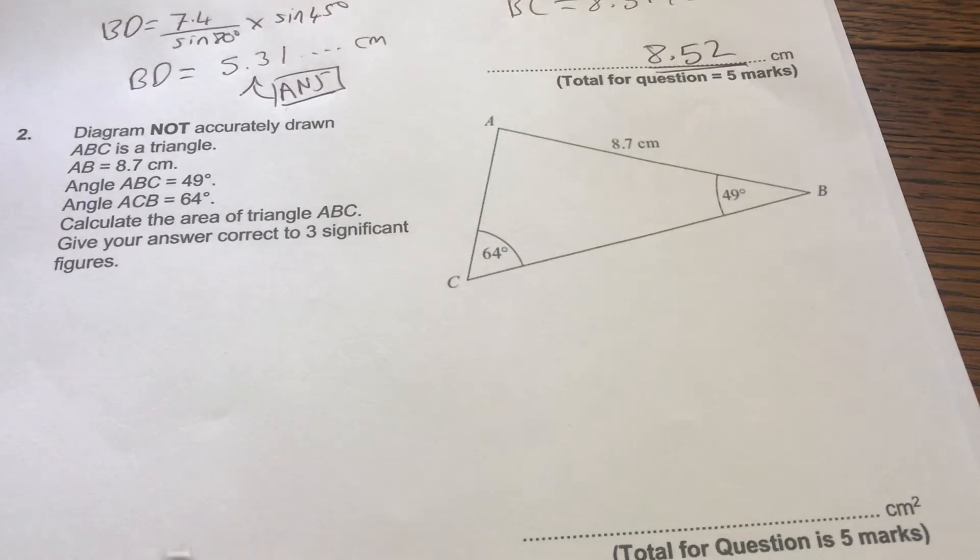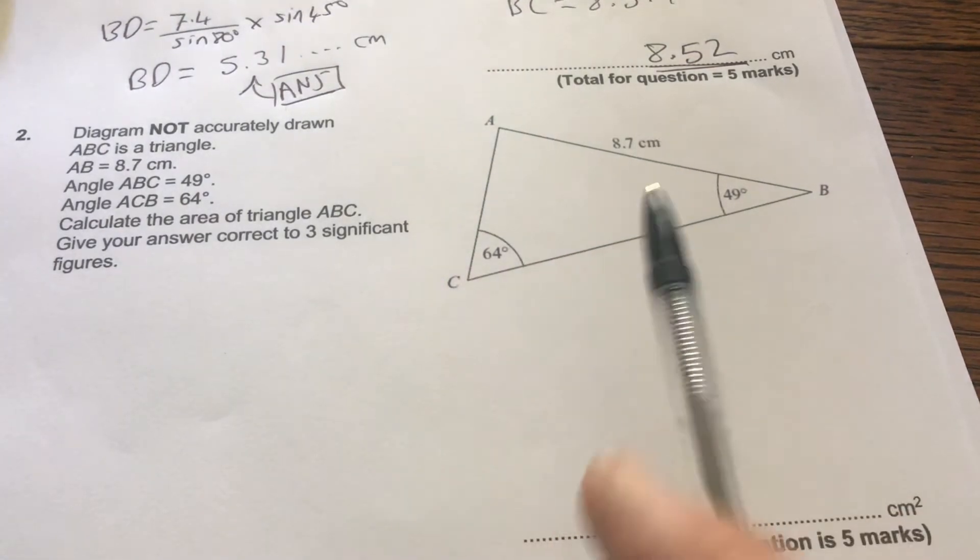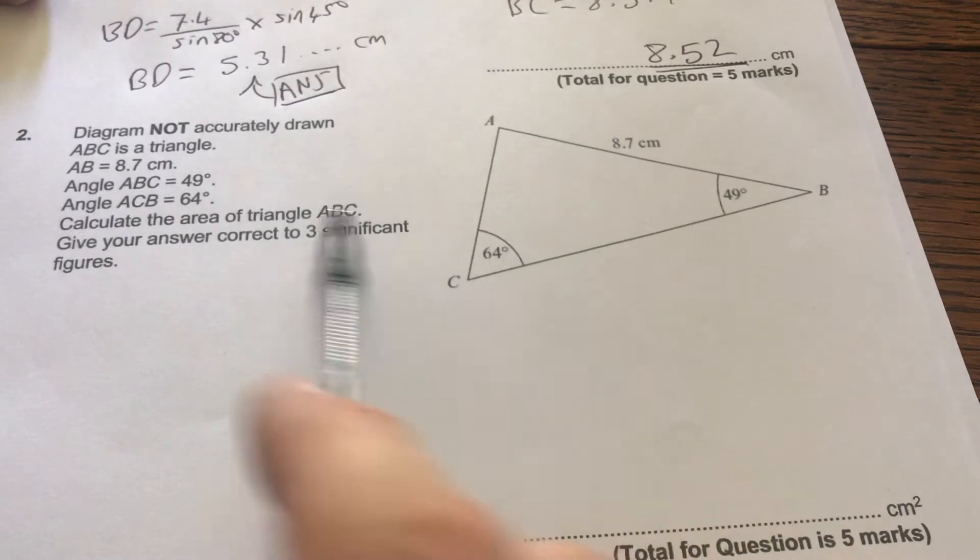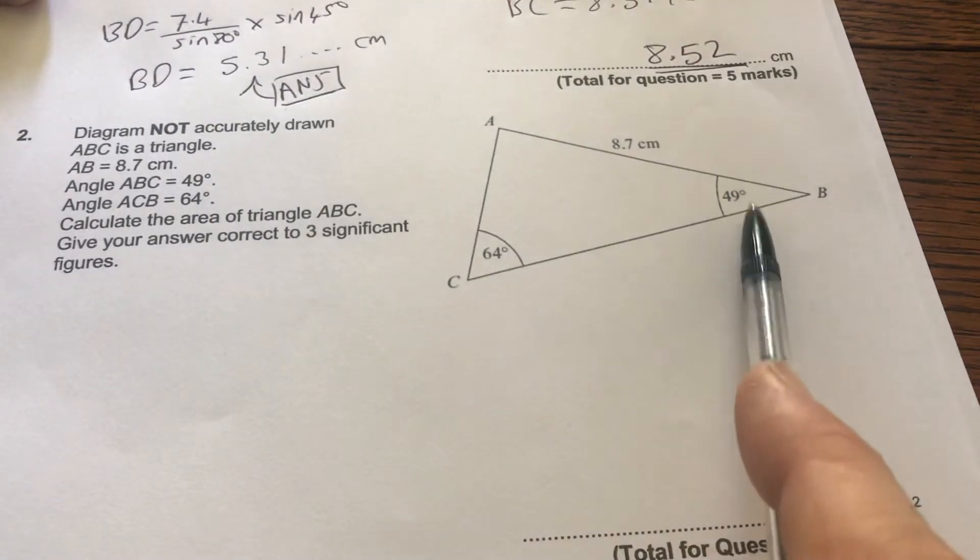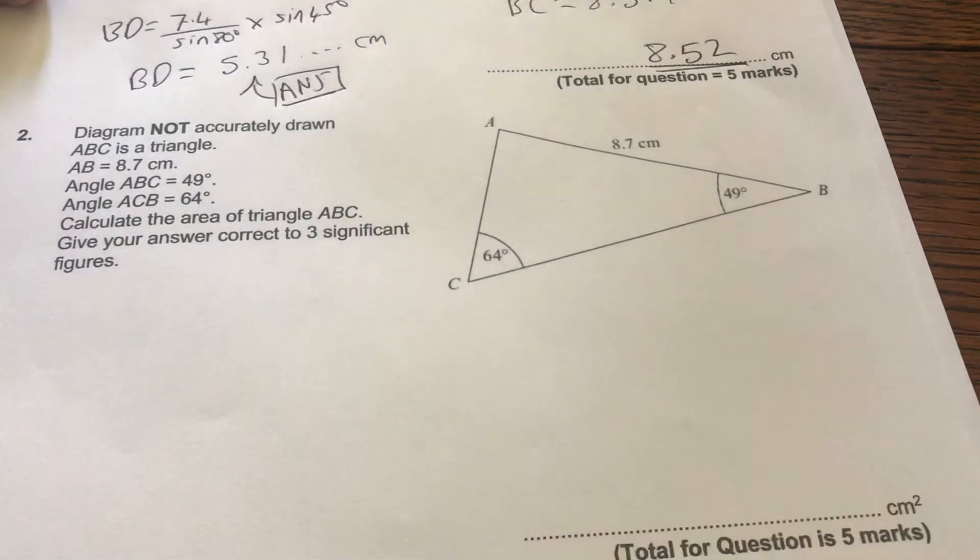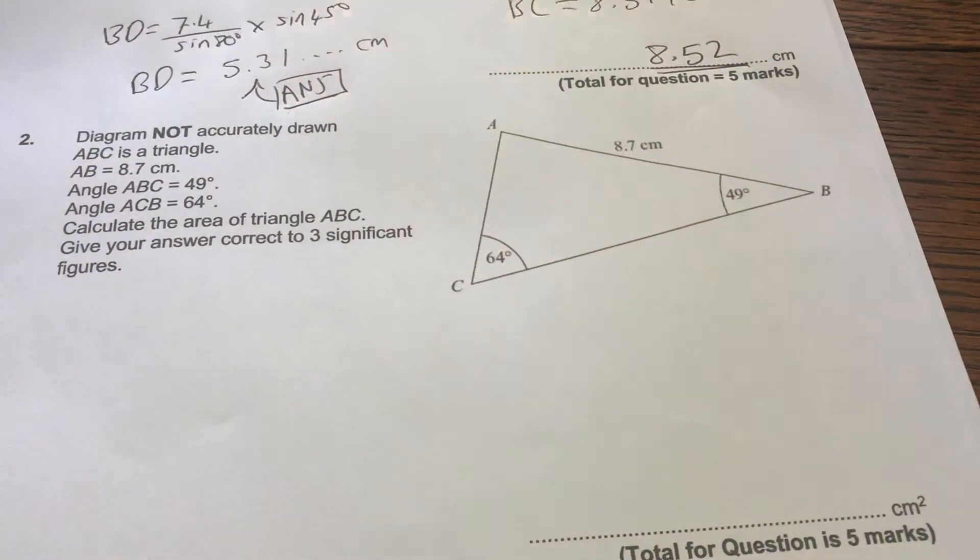Let's have a look at what we've got to do here. We've got the triangle, we know that this is 49 degrees, this is 64 and this is 8.7. I've got to work out the area.